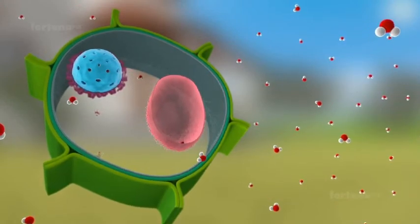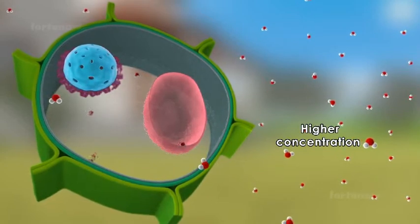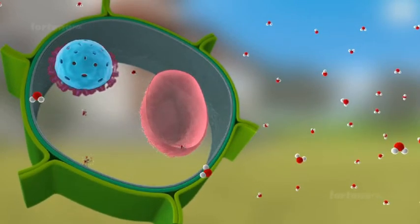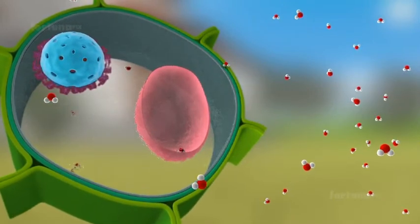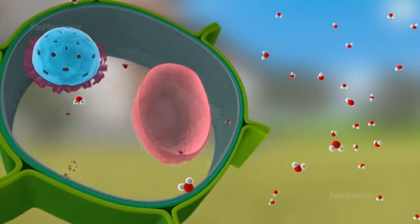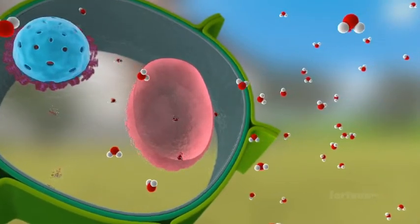If a plant cell is in an environment with a higher concentration of water and a lower concentration of solute than what is in the cytoplasm, then water from outside will move into the cell through this process of osmosis.